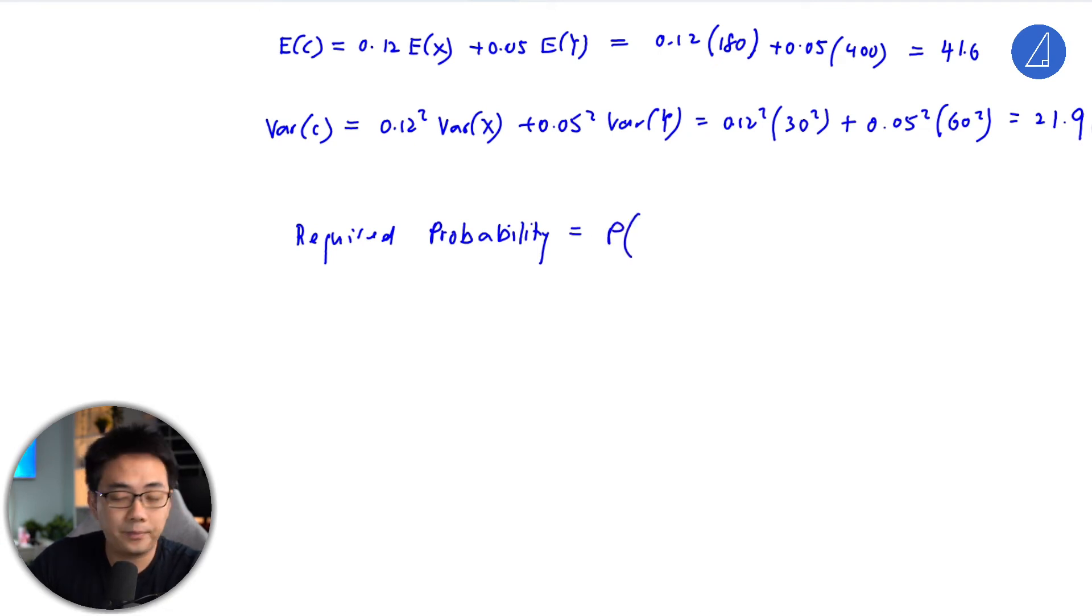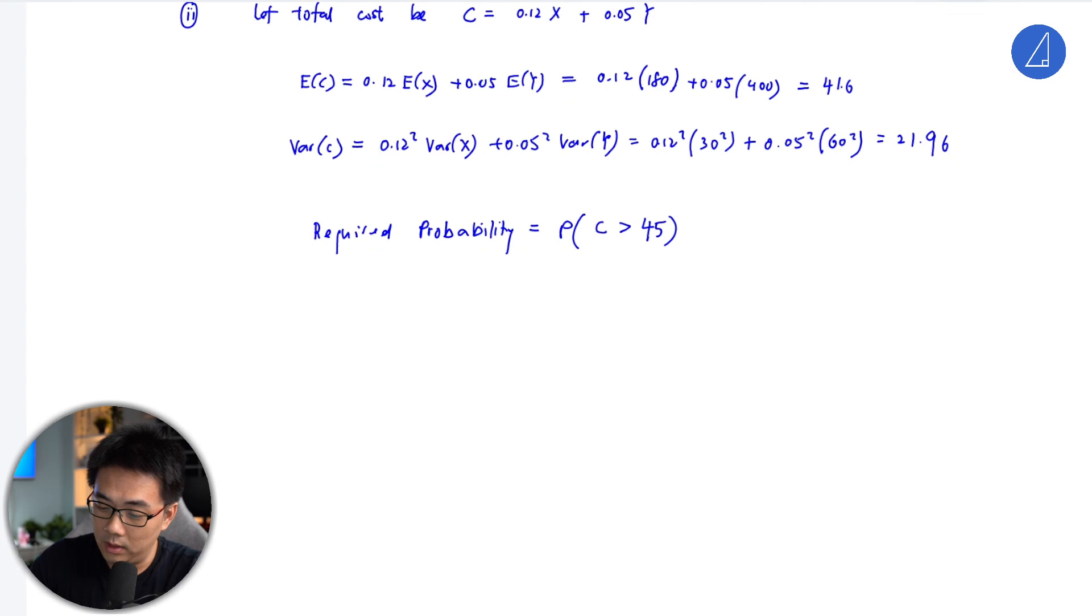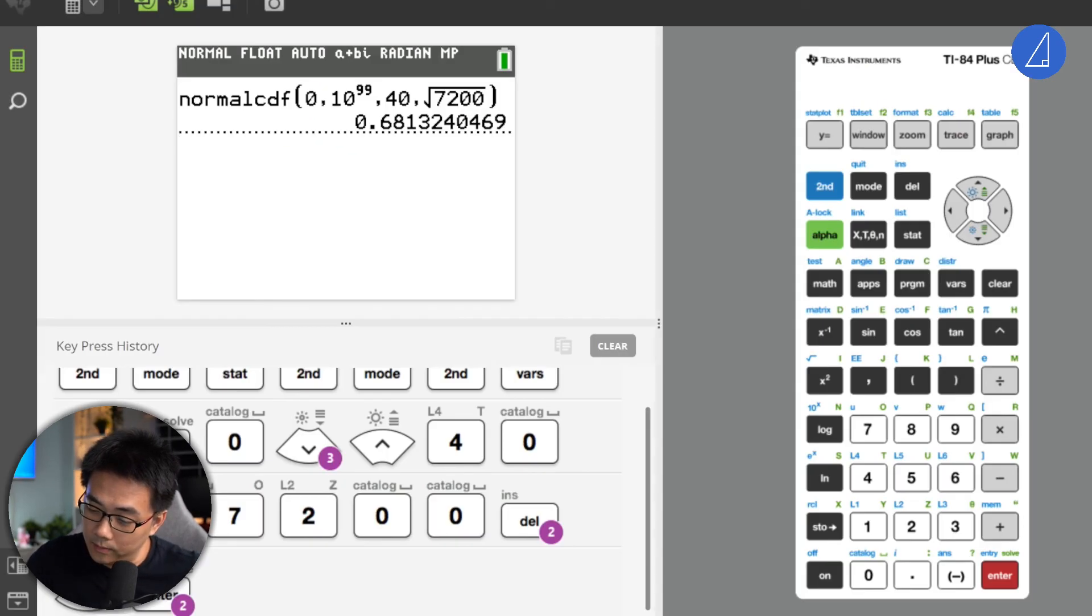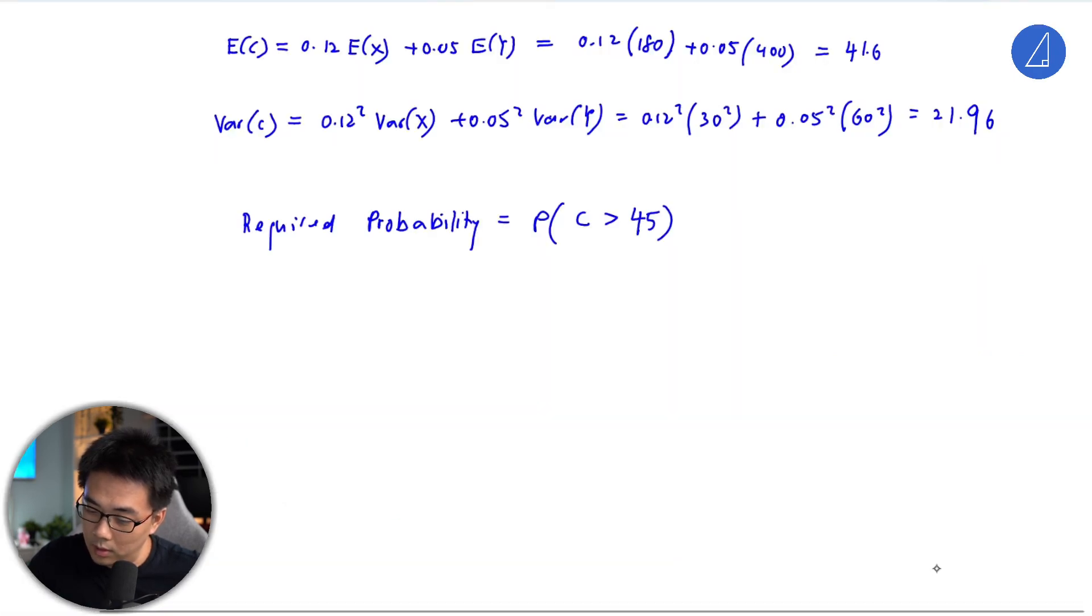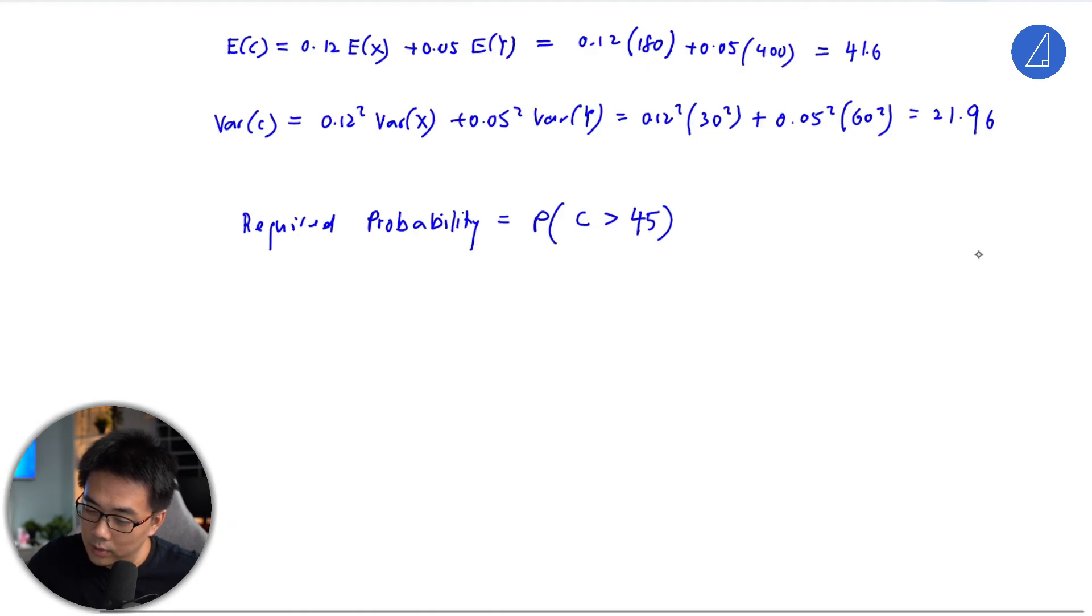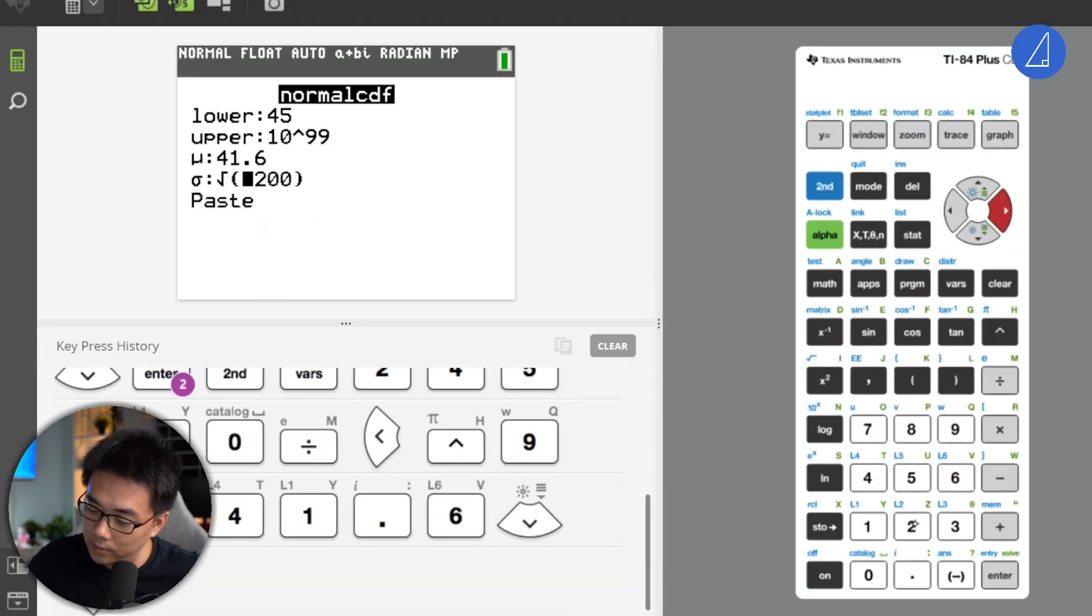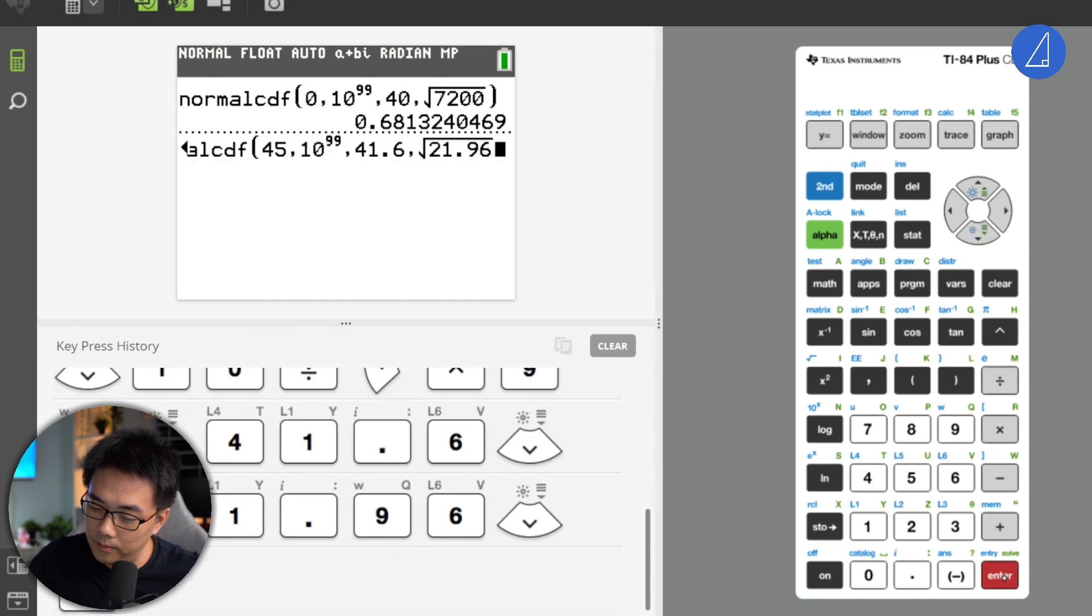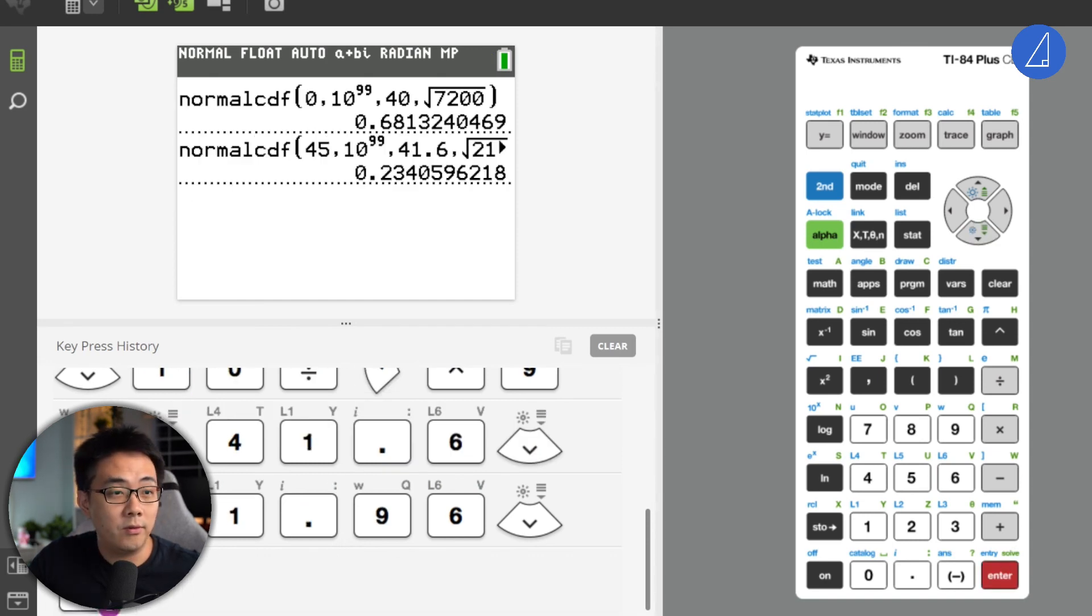P(C greater than 45 dollars), so just keep in calculator. Similarly you will get the lower is 45, infinity, then you put this as 41.6, remember the rooted 21 point... Then enter 0.2340.